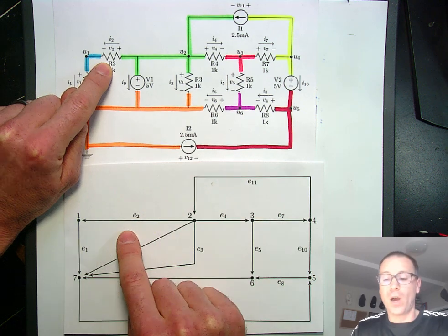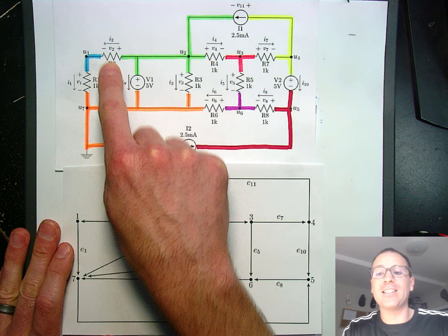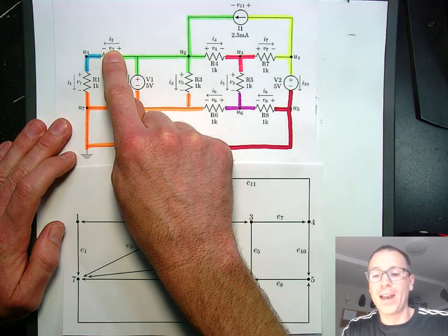For resistor 2, we say that that's edge 2. And notice that the direction of each edge, each directed edge, is in the same direction as the current reference for that element.